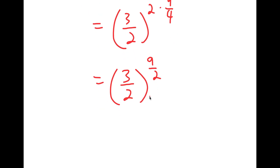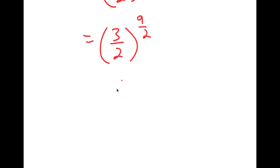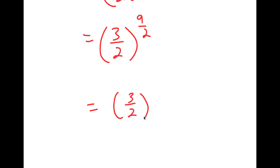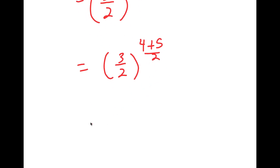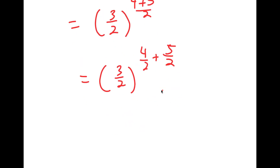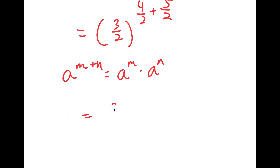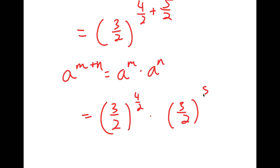So I have 3 over 2 to the power of 9 over 2. Now, 9 over 2 is the same thing as 4 plus 5 over 2, which is equal to 4 over 2 plus 5 over 2. And if I have something in the form a to the power of m plus n, this is equal to a to the power of m times a to the power of n. So this is going to equal 3 over 2 to the power of 4 over 2 times 3 over 2 to the power of 5 over 2.